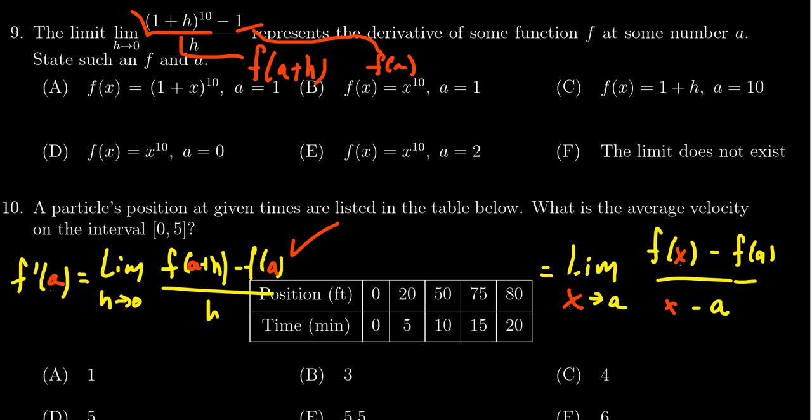Given that this function right here is f(a + h), I see a 1 plus h. That makes me think that maybe a + h is equal to 1 + h. That is to say a equals 1. If that's the case, what's the function in play?